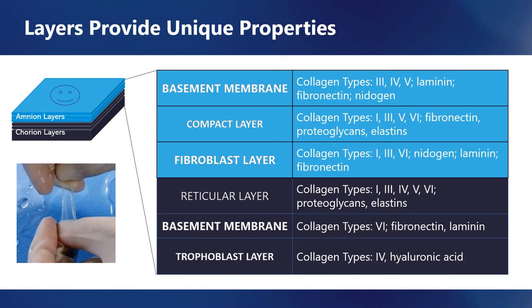The unique physical properties of BioExclude result from the complex extracellular matrix compositions of the amnion and chorion sublayers. Whereas the basement membranes provide barrier function and support for cellular layers, the compact and reticular layers provide elastic and tensile strength that allows the membrane to stretch and bend without failing. The fibroblast and trophoblast layers don't contribute significantly to the physical strength of the membrane, but instead these layers contain most of the soluble factors attributed to these membranes, including antimicrobial peptides, growth factors, and cytokines.